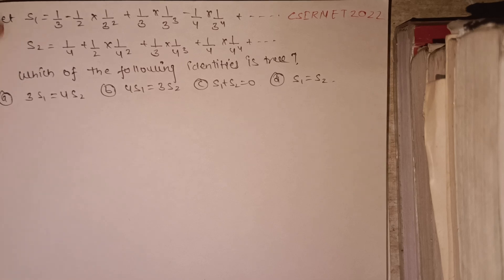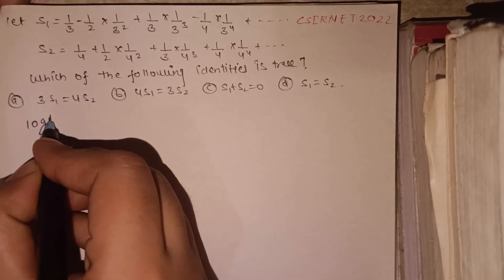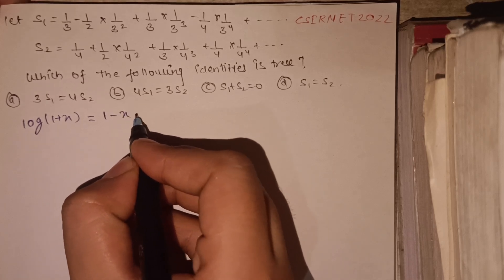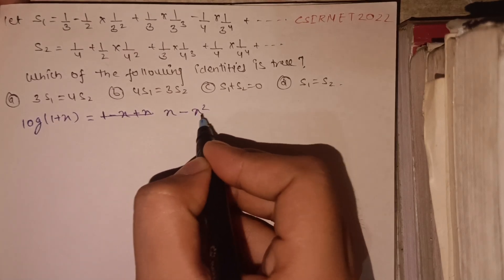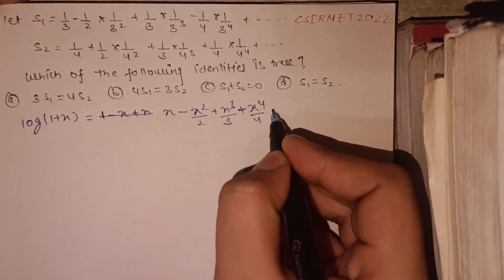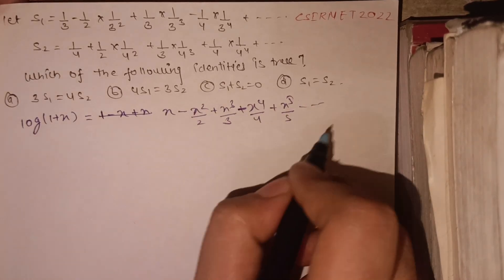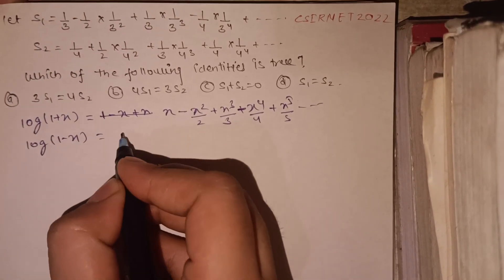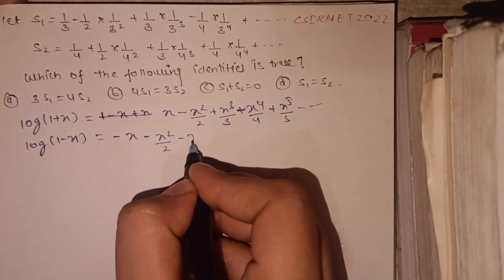As we see, these series S1 and S2 are of the form log x type. The series of log(1+x) equals x minus x²/2 plus x³/3 minus x⁴/4 plus x⁵/5 and so on. And the series of log(1−x) is minus x minus x²/2 minus x³/3 minus x⁴/4 and so on.